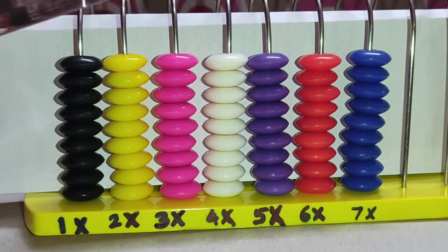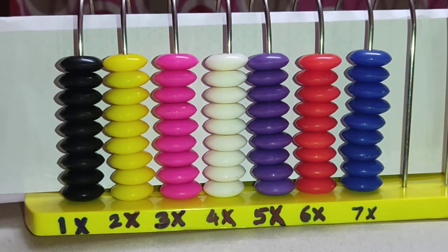See, 9 in each rod, we have 7 rods. So, 7 times 9 is equal to 63.